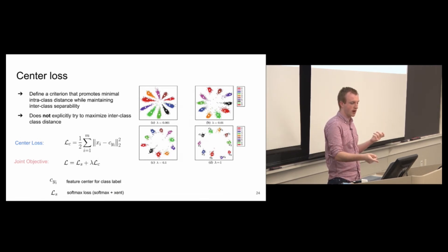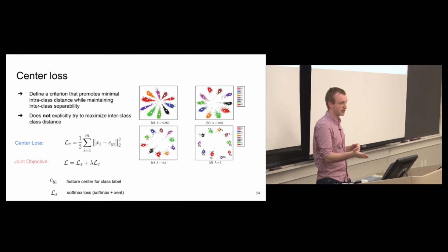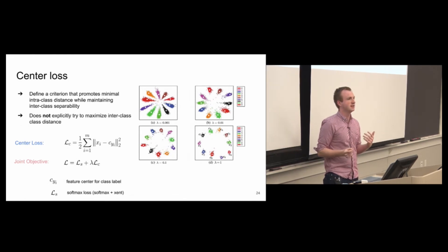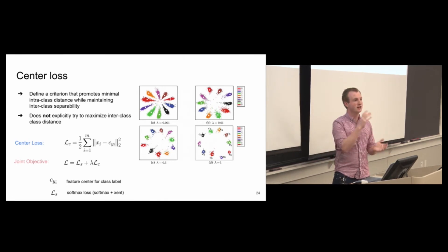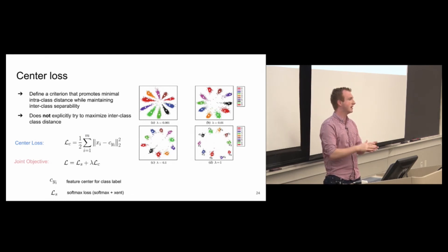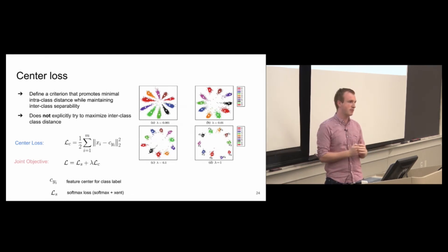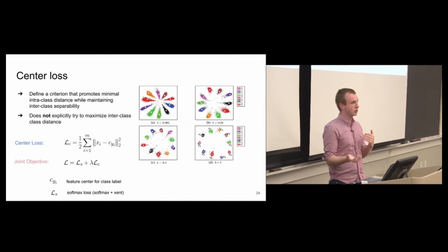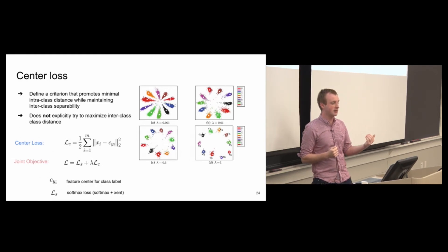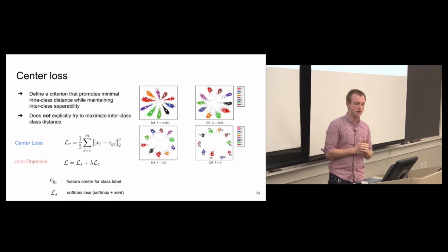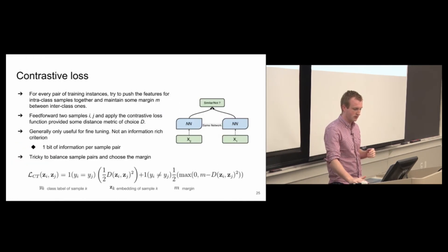Center loss is often used as a joint objective, where Ls is your normal softmax cross-entropy loss — the last layer softmax transformation and cross-entropy objective, which I'll just call softmax loss. You can use it as a joint objective, or often you will use it to further fine-tune your network: train on classification first, and then apply center loss at the end.